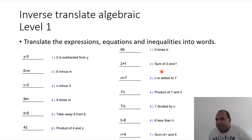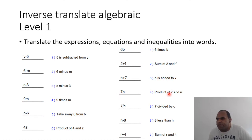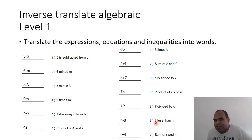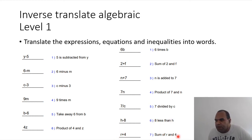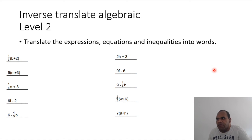For 'two plus f' I can write 'sum of two and f.' For 'n plus 7' I can write 'n is added to seven' or 'product of seven and n.' For 'seven divided by c': 'seven divided by c.' For '8 minus h': turn-around phrase — 'eight less than h.' And for 'r plus 4': 'sum of r and four.' Easily! This is Level 1. Level 2 is next.